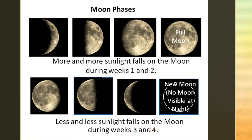During weeks three and four of the moon phases, less and less of the moon is illuminated. At the end of four weeks, the moon is not visible at night. This is called the new moon, which starts the moon phase cycle all over again. This pattern allowed ancient cultures to create moon calendars that signaled times to fish, hunt, plant, and harvest. These calendars also form the basis for the 30 to 31 day month used today.